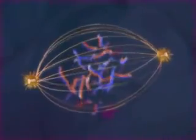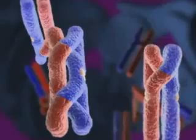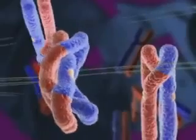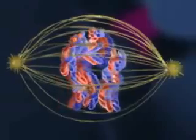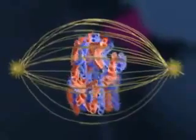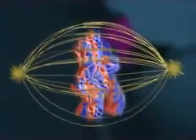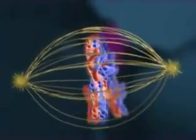After the spindle forms and the nuclear envelope breaks down, microtubules from opposite poles attach to each chromosome of the homologous pair, resulting in a tug of war. At metaphase I, the chromosome pairs are positioned in the middle of the cell.